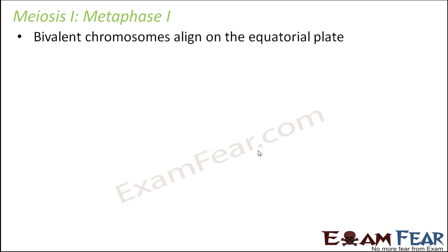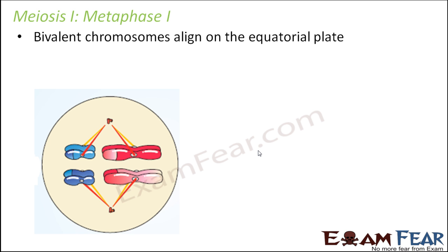So what happens in metaphase: again the bivalent chromosomes align on the equatorial plate, very similar to how it happened in case of mitosis. These chromosomes get connected to the spindle through their kinetochores and they will all be aligned at the equator — this is known as the metaphase plate. But here, if you see how many chromosomes: in case of mitosis you just had 4, but now you have 8.